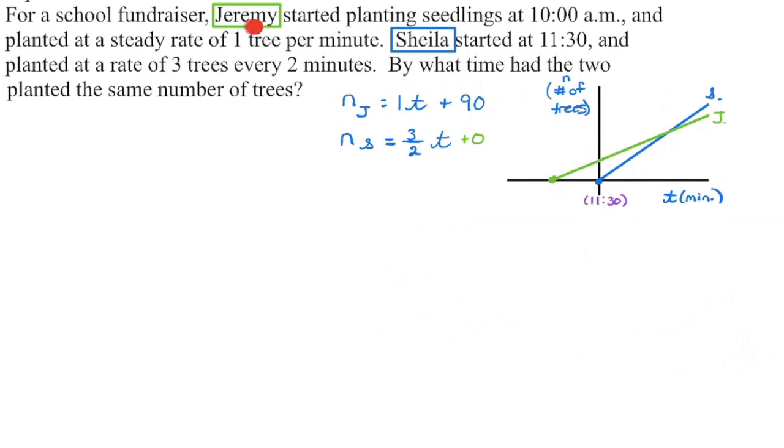Jeremy is planting trees at a rate of one per minute. So he's going to be planting one tree in one minute, one tree in one minute, one tree in one minute. He's not going to be planting quite as quickly, but he got a head start. So if this is 11:30, this is 10 o'clock. Time is in minutes. One and a half hours is 90 minutes. So I know that by the time we get to our starting point here, Jeremy has already planted 90 trees. That's my y-intercept.